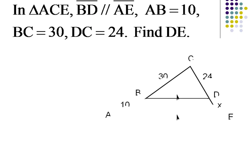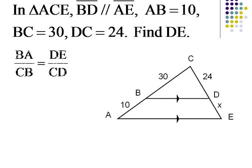Say we have triangle ACE with BD parallel to AE. If AB is 10, BC is 30, DC is 24, find DE. We've set up this simple proportion with two ratios equal to each other, and we can see that AB compared to CB is 10 to 30.